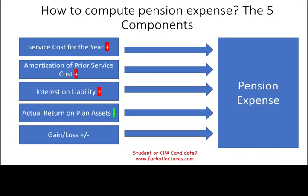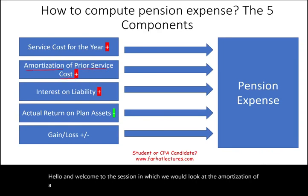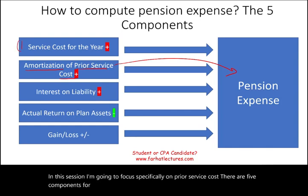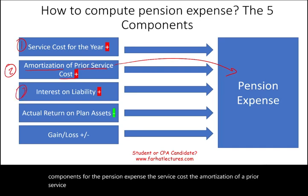Hello and welcome to the session in which we look at the amortization of a prior service cost as it relates to pension expense. In this session I'm going to focus specifically on prior service cost. There are five components for the pension expense: the service cost, the amortization of a prior service cost, interest on liability, actual return, and gains/losses.